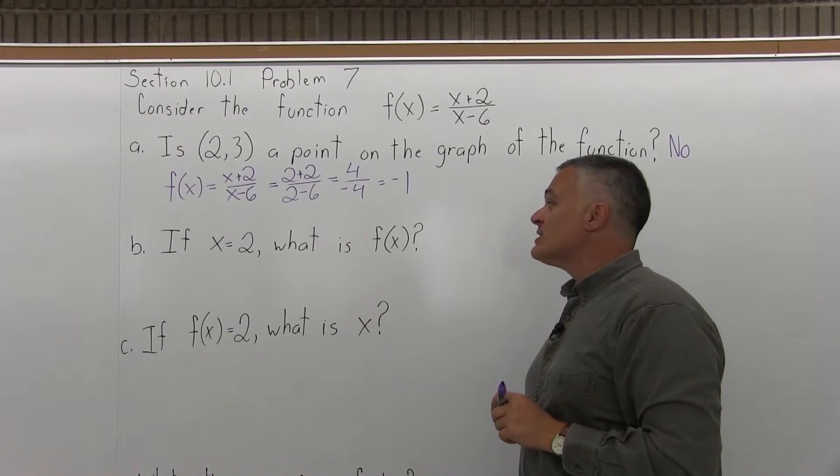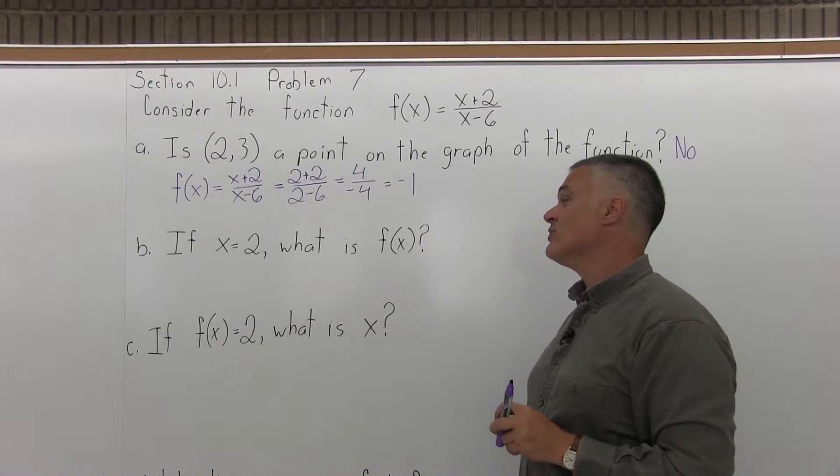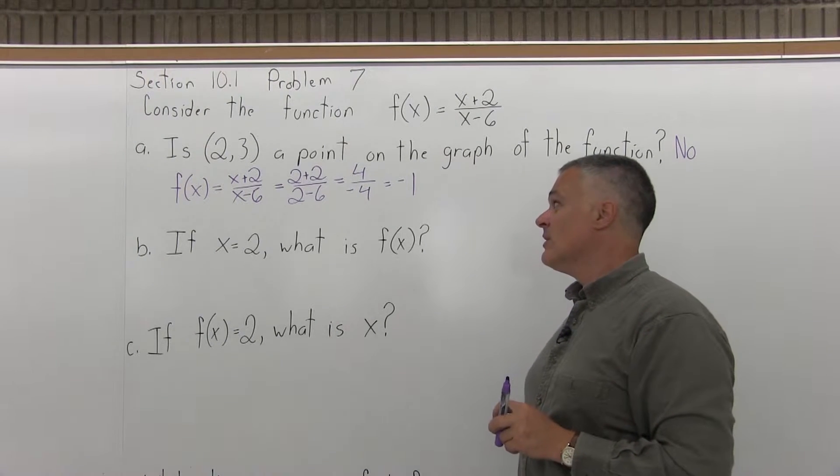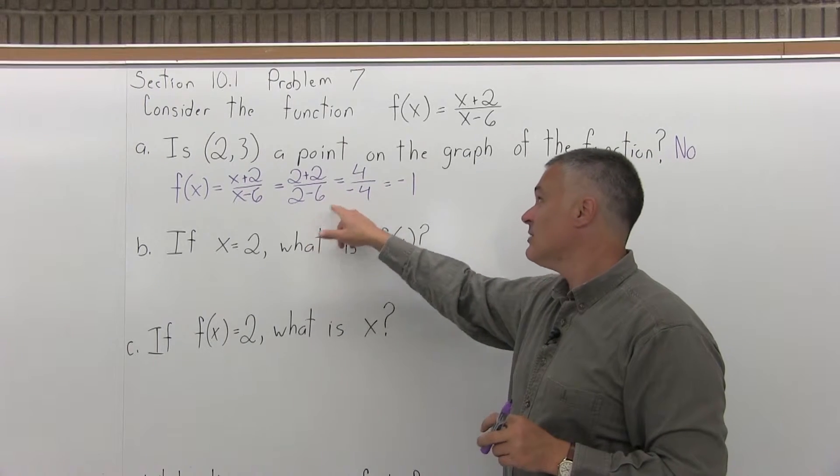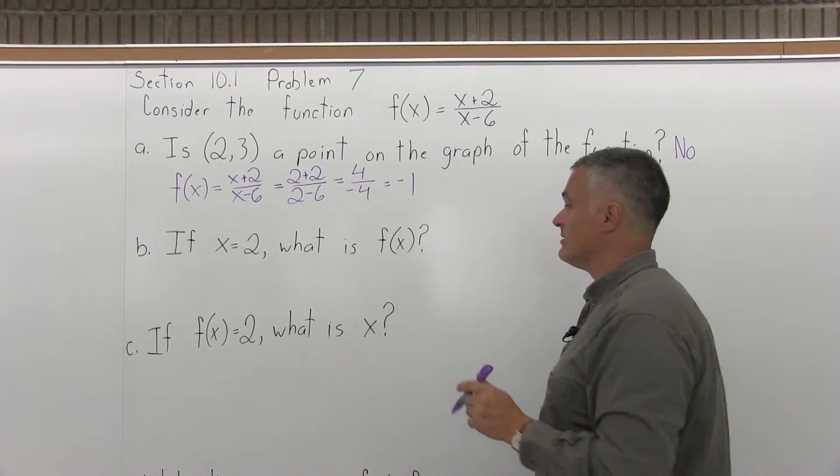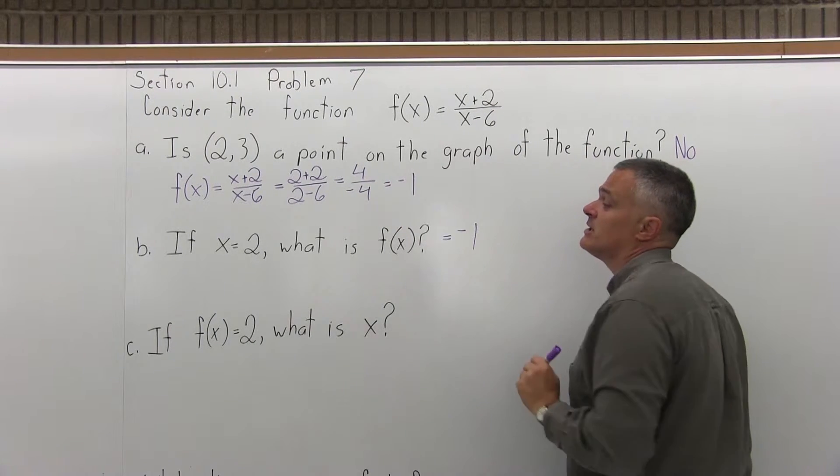Part B says if x is 2, what is f(x)? Which is asking you, if you put in a 2, what do you get out? Well, actually, the answer to part A, we had figured out if we put in a 2, we get out a negative 1. So, there's no need to do the work over again.